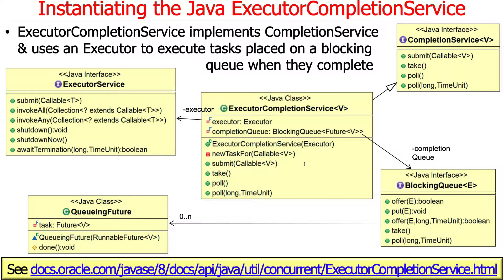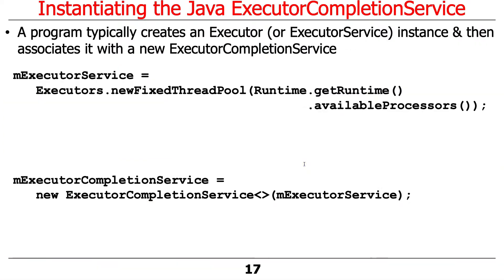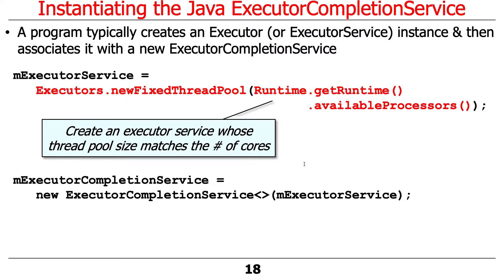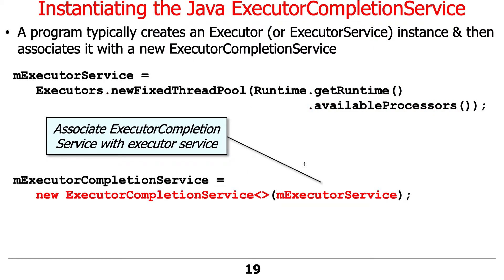Here's how you actually create an instance of the Executor Completion Service. Basically, you write code that first makes an Executor Service implementation, which could be a fixed thread pool as shown here, a cached thread pool, a fork-join pool, or whatever type of executor implementation you'd like. Then you create an Executor Completion Service instance, associating it with whatever executor you just created. Once you've got that, you can submit tasks to the Executor Completion Service, which uses the executor to run them in the background. The results are returned through the blocking queue so that clients can pick up those results in the order that they complete — which is the real secret sauce of this whole thing.